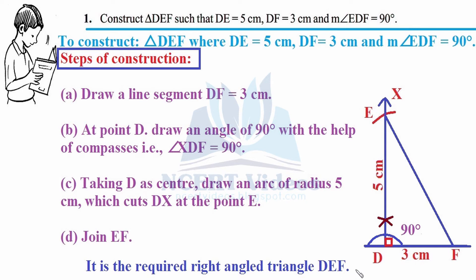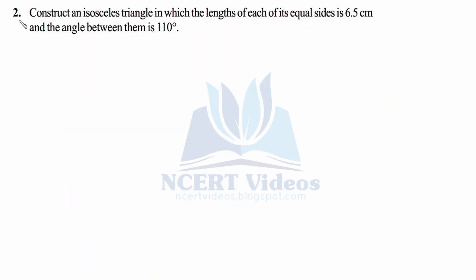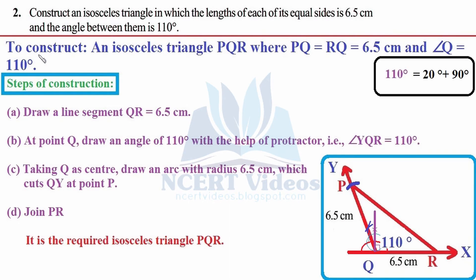This is the required right-angled triangle DEF, right-angled at D. That completes question one. Question two: construct an isosceles triangle in which the length of each of its equal sides is 6.5 cm and the angle between them is 110 degrees.